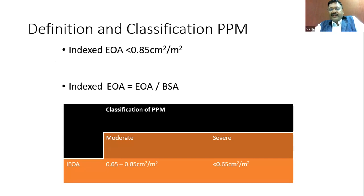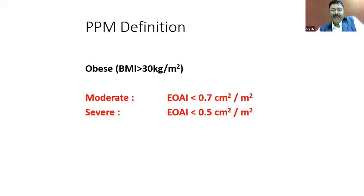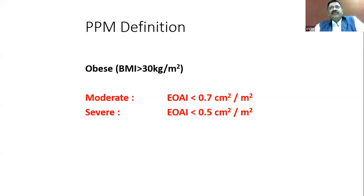PPM is graded as moderate (indexed EOA 0.6–0.85 cm²/m²) or severe (less than 0.65 cm²/m²). However, for obese patients with BMI greater than 30 kg/m², cardiac output does not increase proportionally to BSA, so the definition changes: moderate PPM is less than 0.7 cm²/m² and severe is less than 0.5 cm²/m².